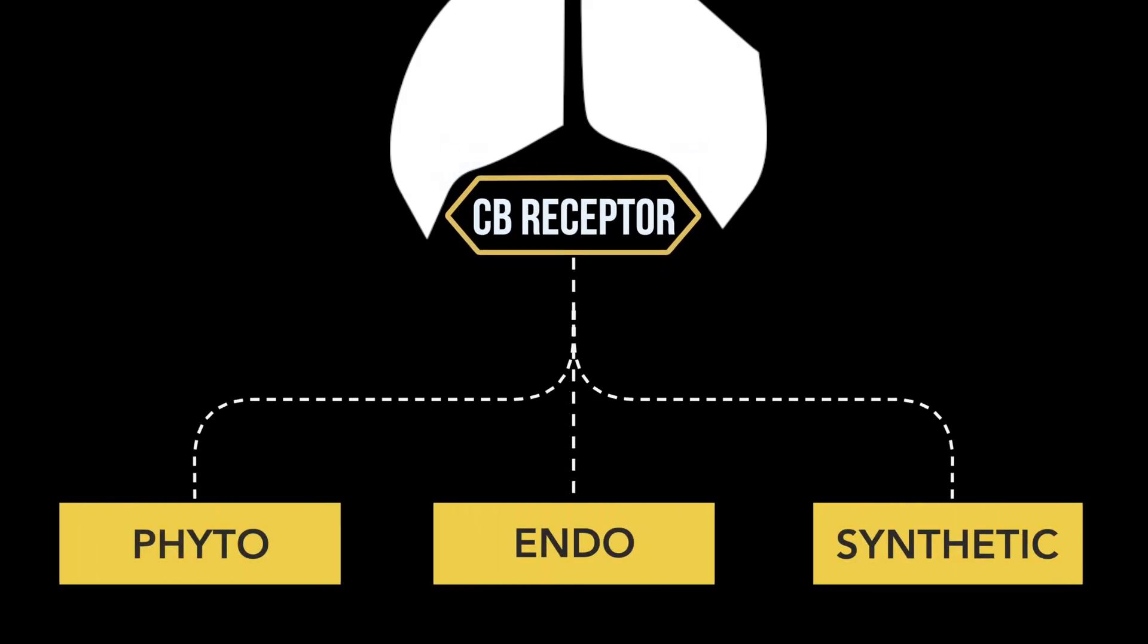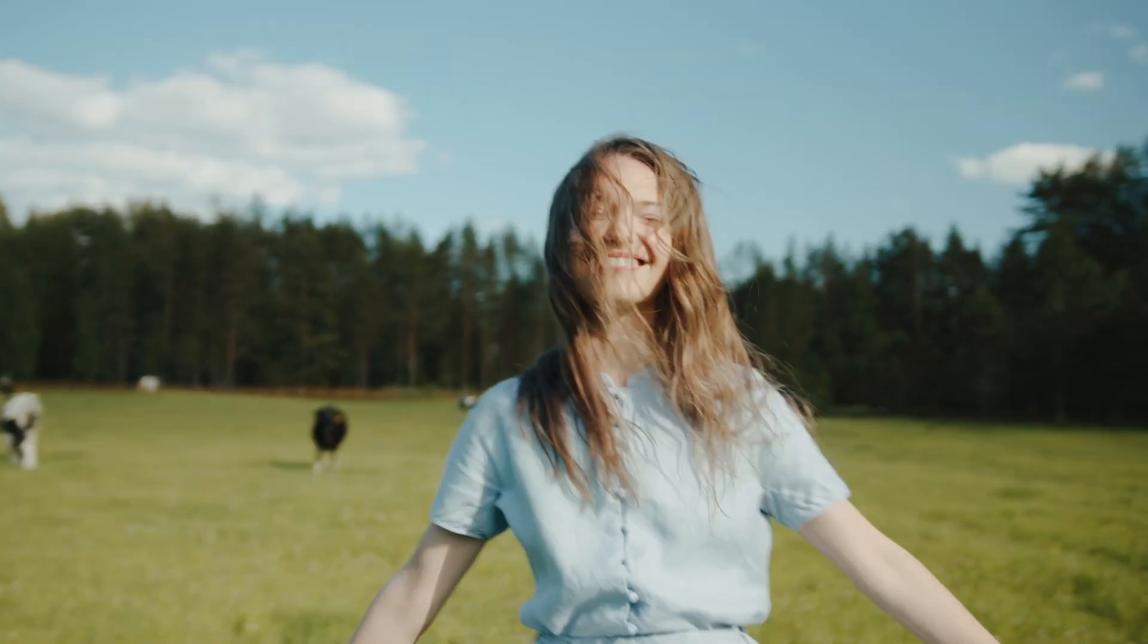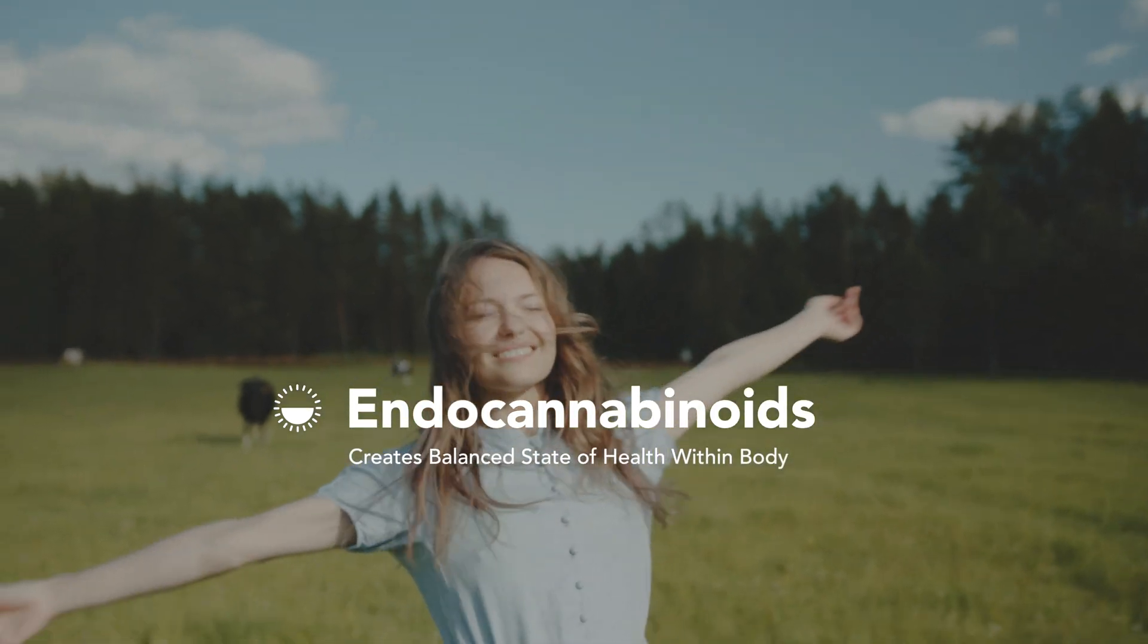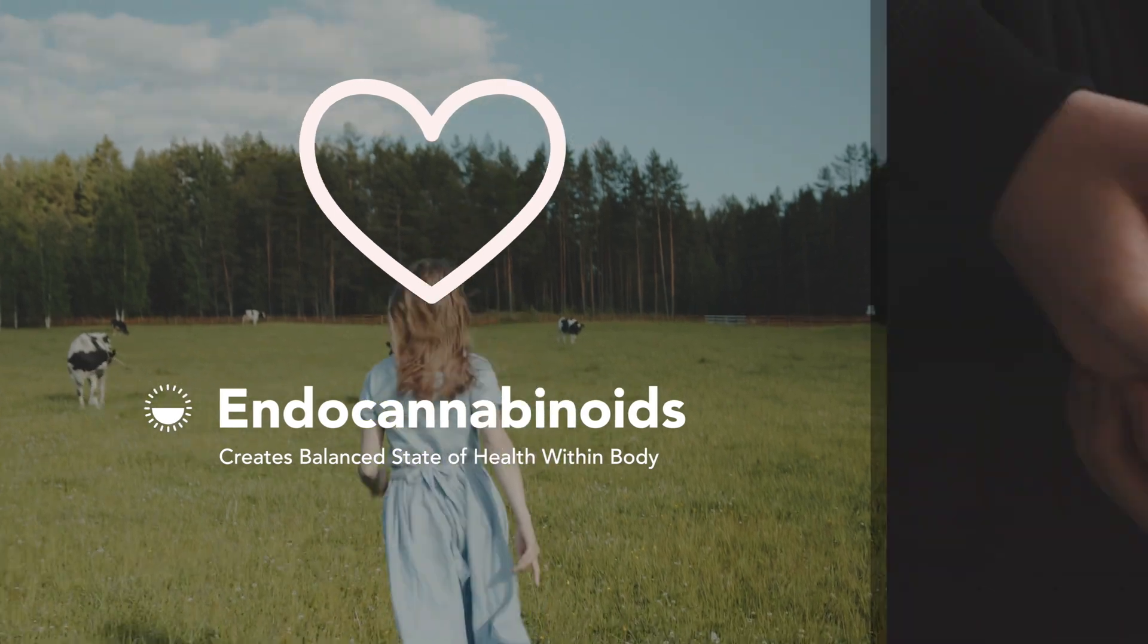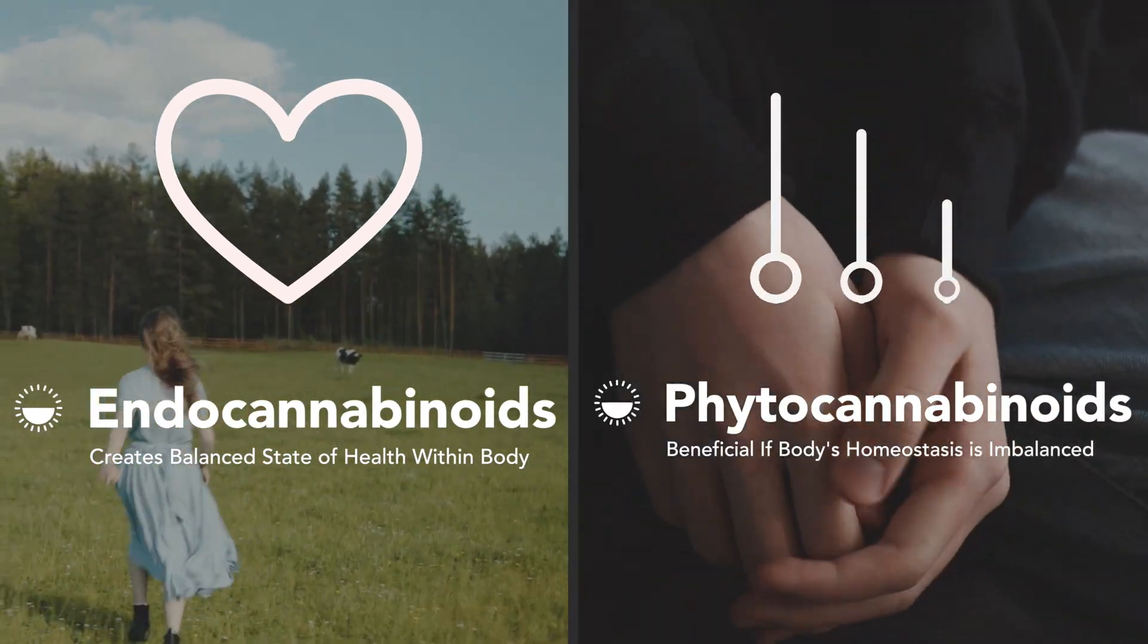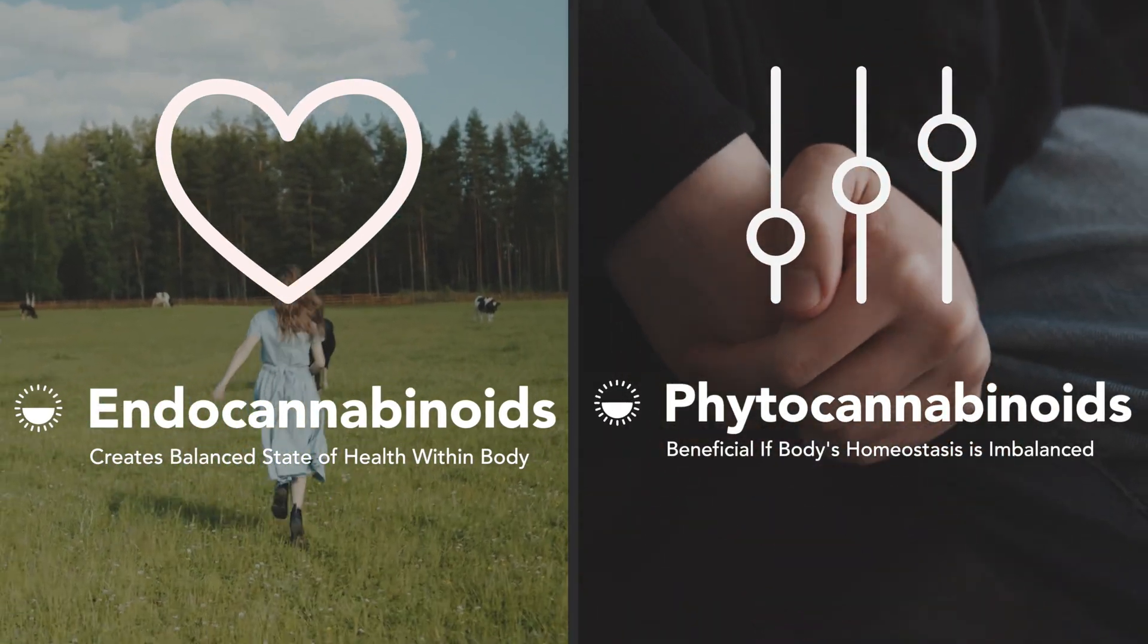Endocannabinoids and phytocannabinoids aren't necessarily different in terms of interactions, as they both activate the body's ECS by binding to cannabinoid receptors. But they do differ in how the ECS reacts to them. On one hand, endocannabinoids activate a homeostatic effect, bringing the body to a balanced state of health, whereas phytocannabinoids can be beneficial if the body's homeostasis is disrupted due to an imbalance.